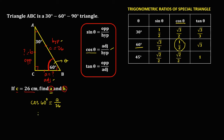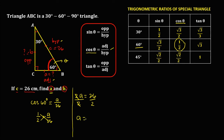So 1/2 equals A over 26. To solve for A, cross multiplication gives 2A equals 1 times 26, that's 26. Dividing both sides by 2, A is equal to 26 divided by 2, that's 13 centimeters. So this is now for side A.